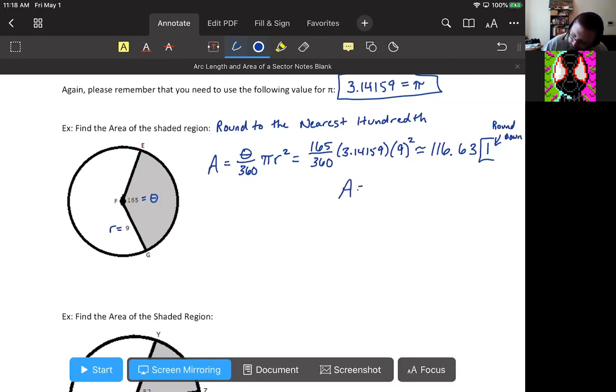So our area would be 116.63 square units. That would be our area of a sector. One more example, so if you want to grab a screenshot, do it now.